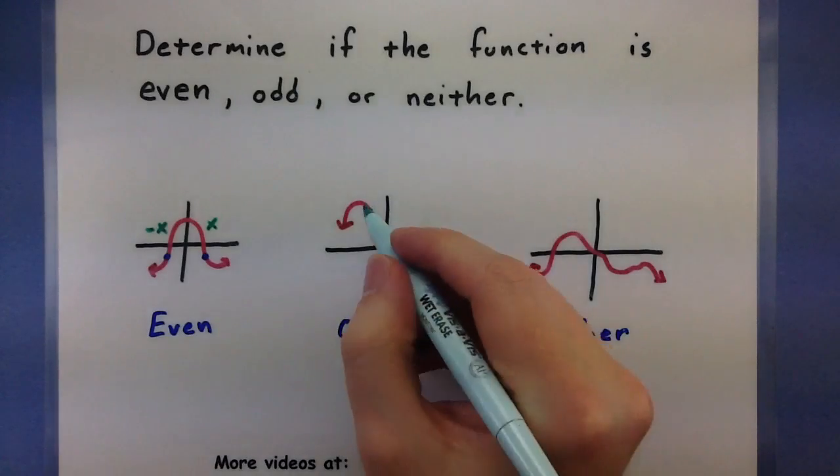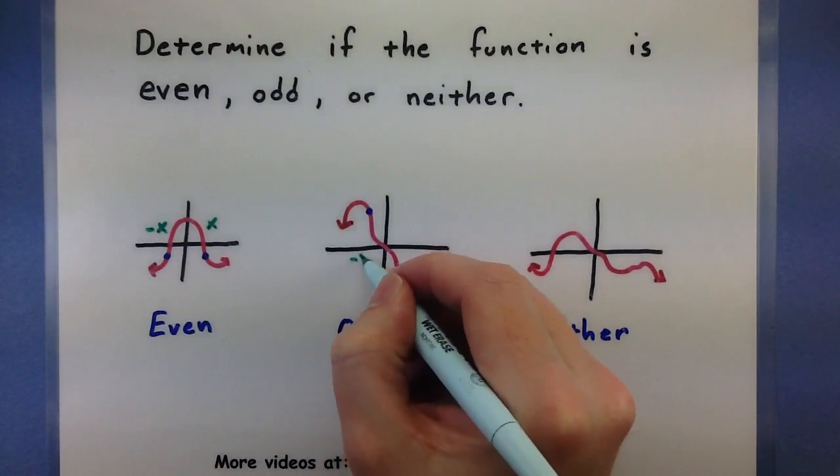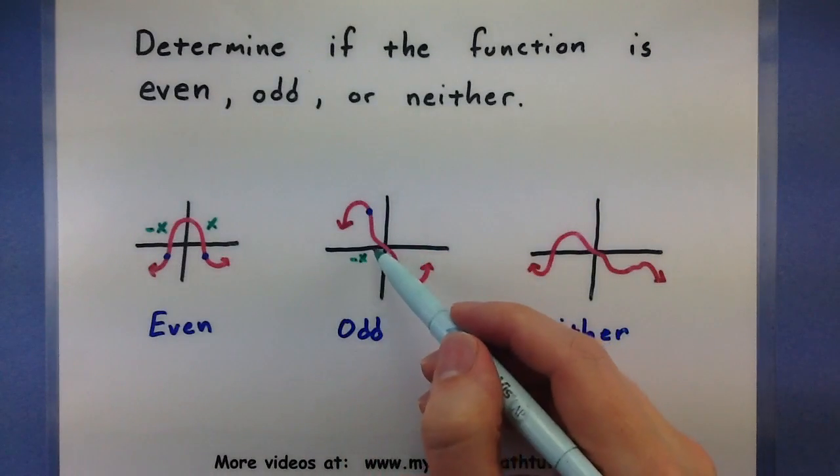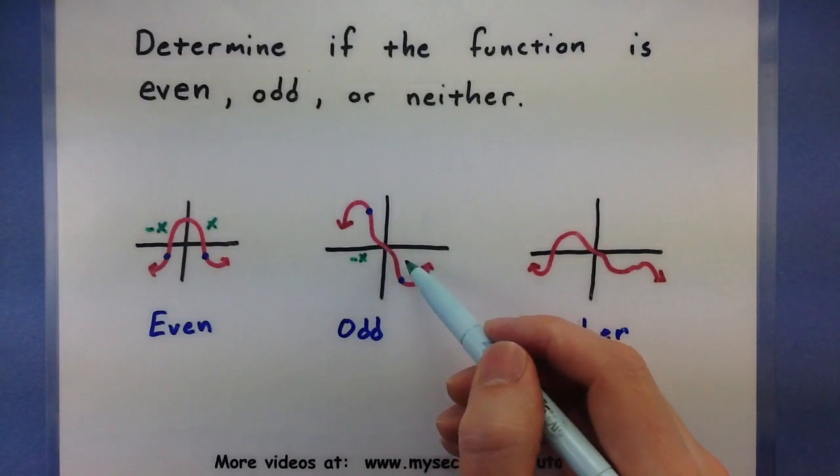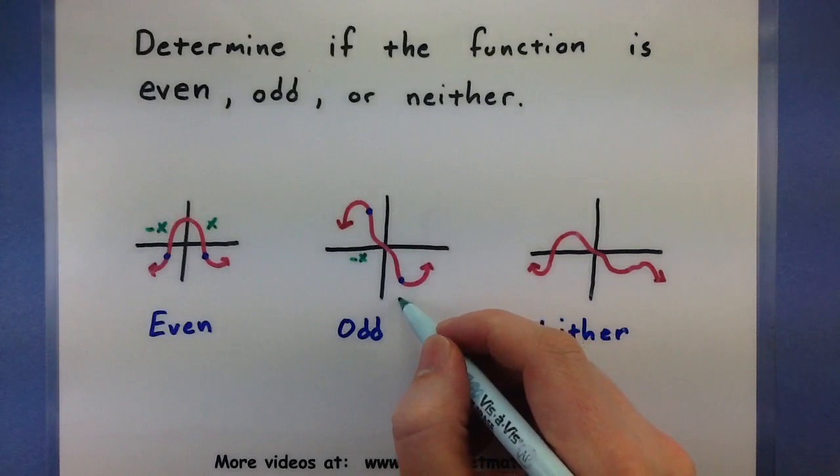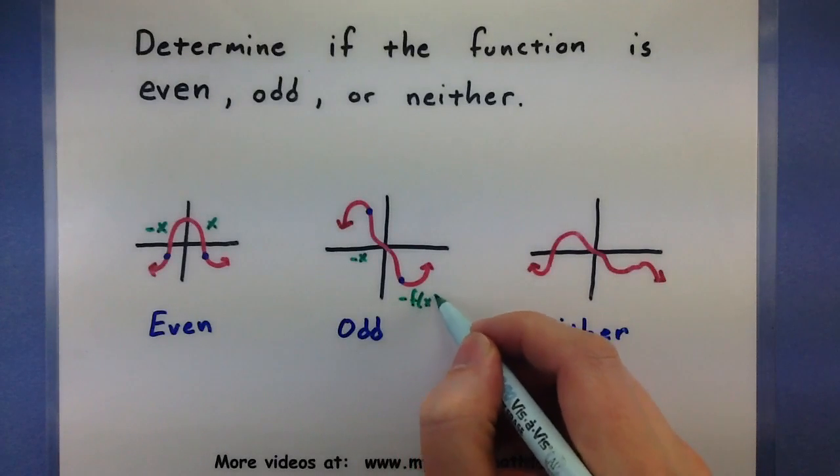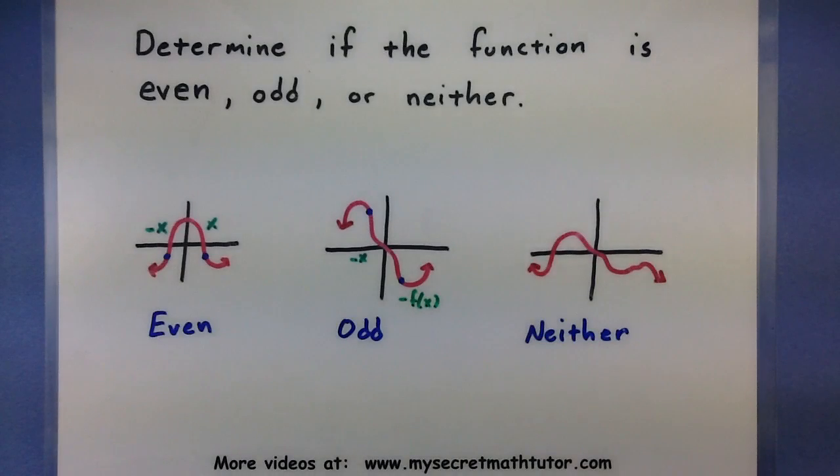So if I was to plug in a negative x, so maybe that came from this point, that's the same as plugging in a normal x and then making it negative. So this would be my negative f of x down here. So again, this is checking all of those origin symmetries.